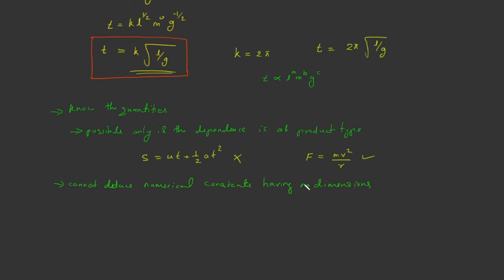We cannot deduce numerical constants having no dimensions by using dimensional analysis. The third limitation is that this method works only if you have as many equations as unknowns. These are the limitations of this method of deducing a relation among physical quantities. So we studied how to derive or deduce relations among physical quantities using dimensional analysis.